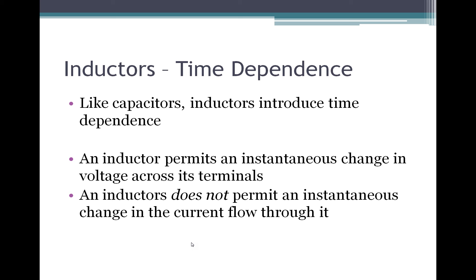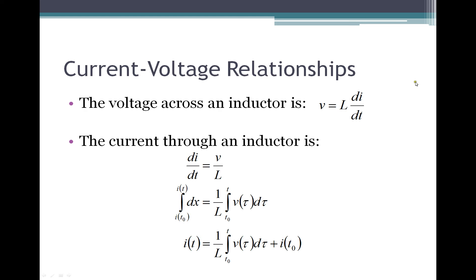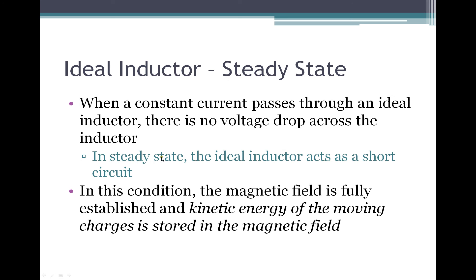Inductors introduce time dependence into systems. An inductor permits an instantaneous change in voltage across its terminals, but does not allow an instantaneous change in the current flowing through it. An ideal inductor in steady state, when we have constant current, has no voltage drop across it — from the relationships, if current is constant, we have a zero volt potential across the inductive element. In steady state, the ideal inductor acts like a short circuit or purely like a wire. In this condition, the magnetic field is fully established, and the kinetic energy of all the moving charges is fully stored within the magnetic field of the inductor.